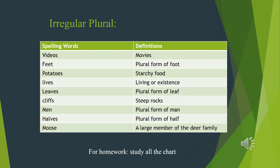These are the 9 new vocab words related to the lesson on irregular plurals. Make sure you study them very well. Videos: movies. Feet: plural form of foot. Potatoes: starchy food. Lives: living or existence. Leaves: plural form of leaf. Cliffs: steep rocks. Men: plural form of man. Halves: plural form of half. Moose: a large member of the deer family.